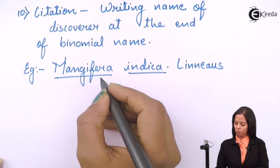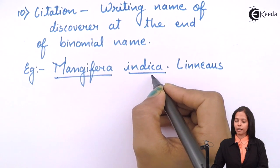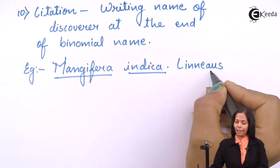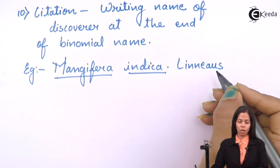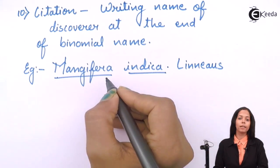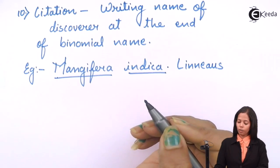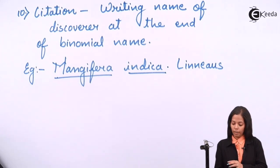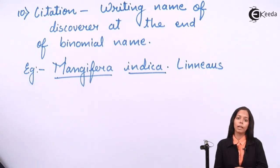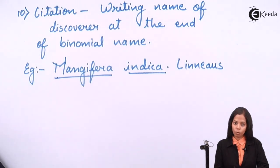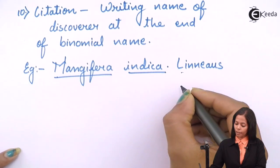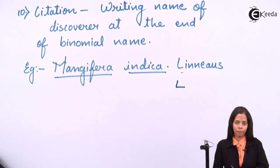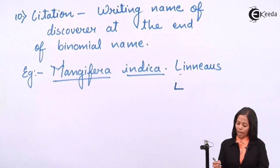For example, after writing Mangifera indica, the name Linnaeus is written, because Carolus Linnaeus, the father of taxonomy, gave the name to mango. Later, scientists realized there could be future scientists with the same name, so to avoid repetition they suggested writing just the initial of the name instead of the full name. This shortened form is called citation.